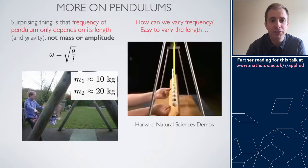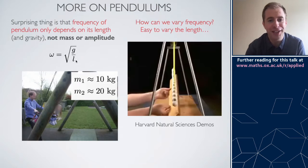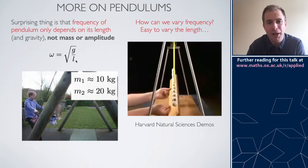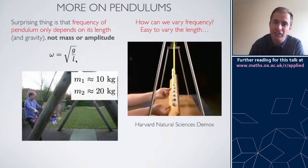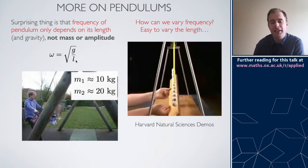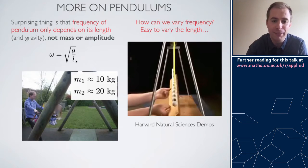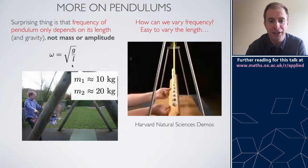The main result of this analysis is that the frequency of the pendulum omega is the square root of g over L. This result is surprising in two ways: it's independent of the mass attached to the pendulum, and it's also independent of the amplitude you pull it back to — provided you stick to the small angle assumption.